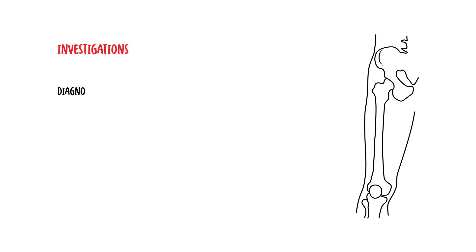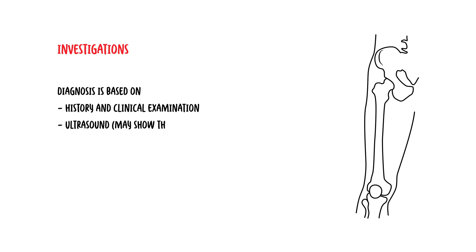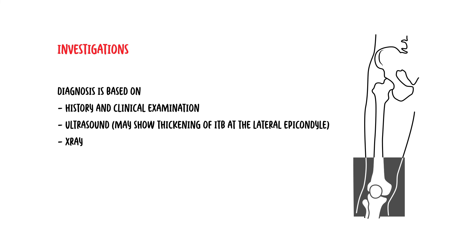The diagnosis of iliotibial band syndrome is based on history and clinical examination. However, investigations that could be ordered include an ultrasound, which may show thickening of the iliotibial band at the lateral epicondyle, an x-ray, and an MRI, only if the diagnosis is unclear.